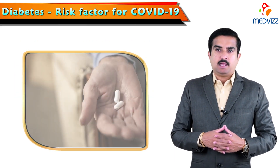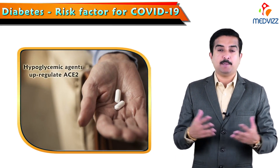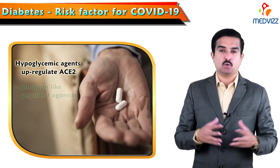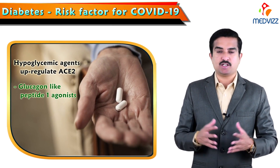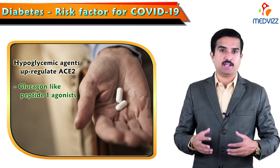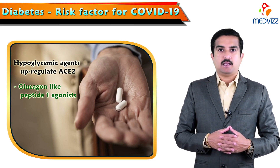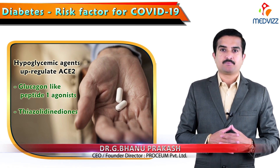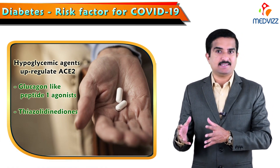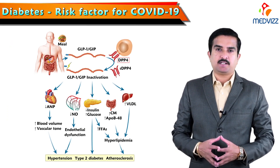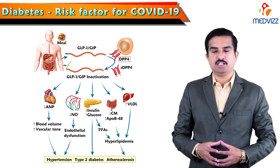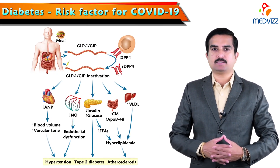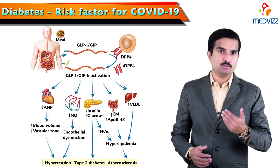Some diabetic individuals might be taking hypoglycemic agents. These hypoglycemic agents, like glucagon-like peptide-1 agonists — classically called GLP-1 agonists — and examples like thiazolidinediones, upregulate ACE2. Dipeptidyl peptidase 4, commonly referred to as DPP4, is highly involved in glucose and insulin metabolism as well as immune regulation.